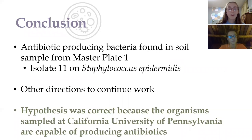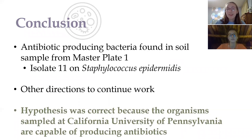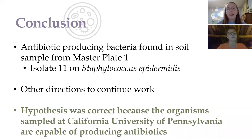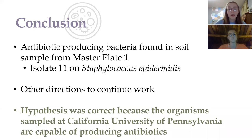In conclusion, we did find an antibiotic-producing bacteria in the one gram of peat soil sample we gathered. From the serial dilutions and single colonies, we created master plate one, and through those isolates we found that isolate 11 was the antibiotic producer on the Staphylococcus epidermidis plate through the patch plating method. There are many other directions that can be completed to continue this work and potentially find other antibiotic producers to fight the antibiotic resistance crisis. Our hypothesis was confirmed — the organisms sampled at Cal-U are capable of producing antibiotics.